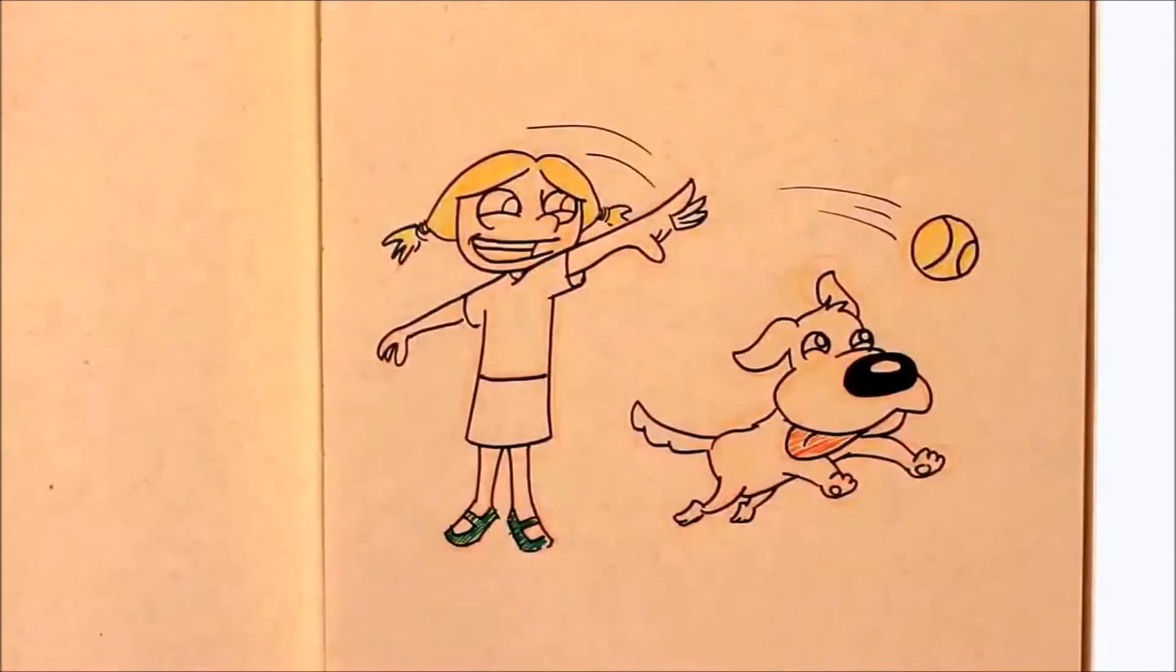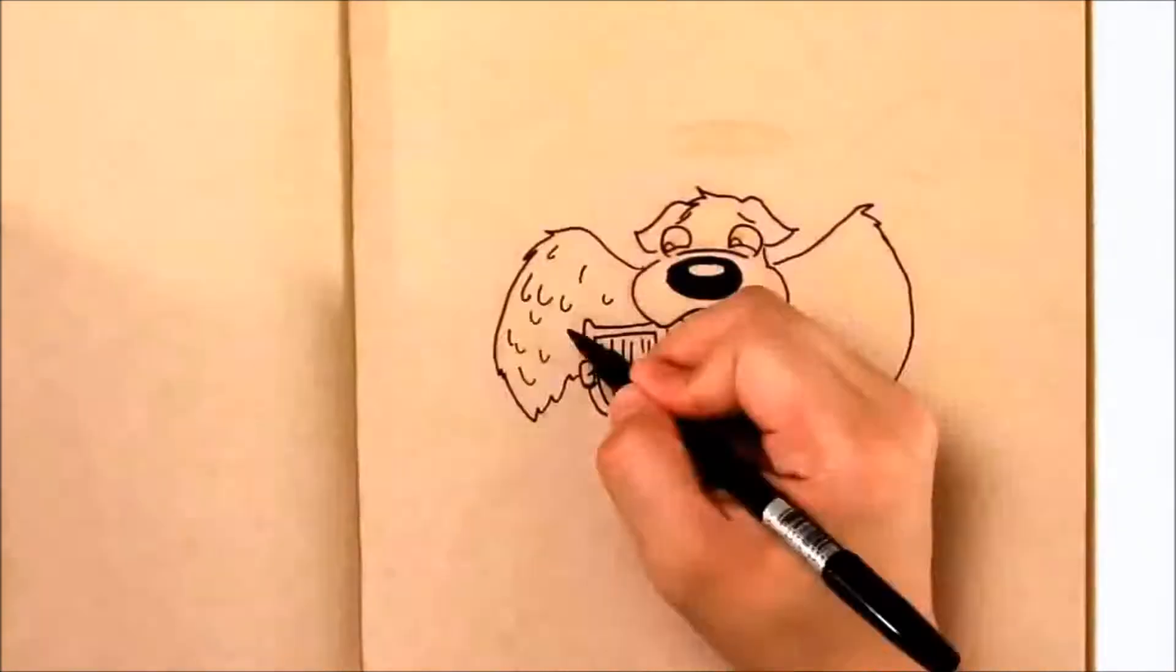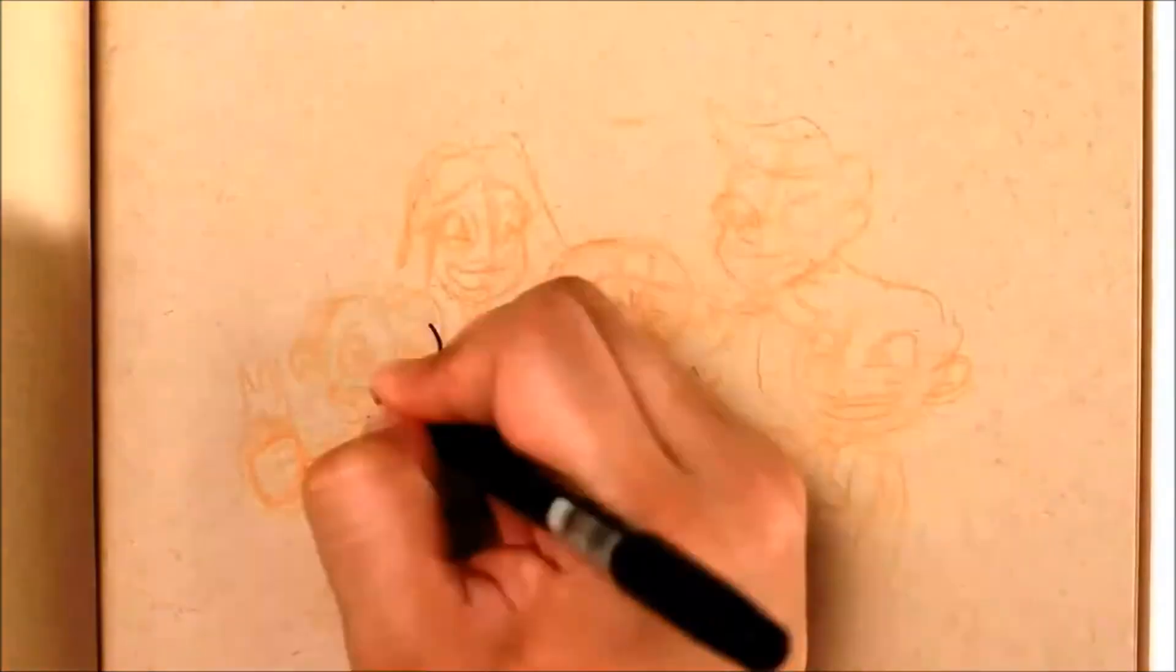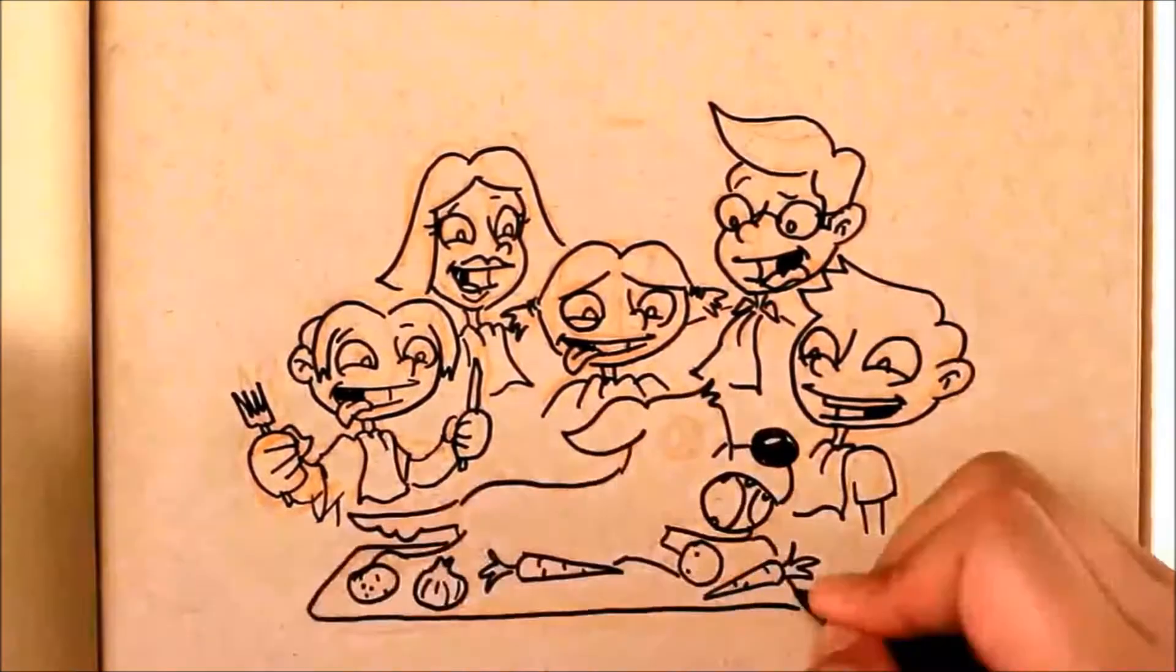Turns out, Muffin is a great dog. But one day, she chases a squirrel, gets hit by a car, and goes straight to doggy heaven. The kids are heartbroken. And so are Mum and Dad. Together, they decide that the best thing to do is to cook and eat Muffin for dinner.